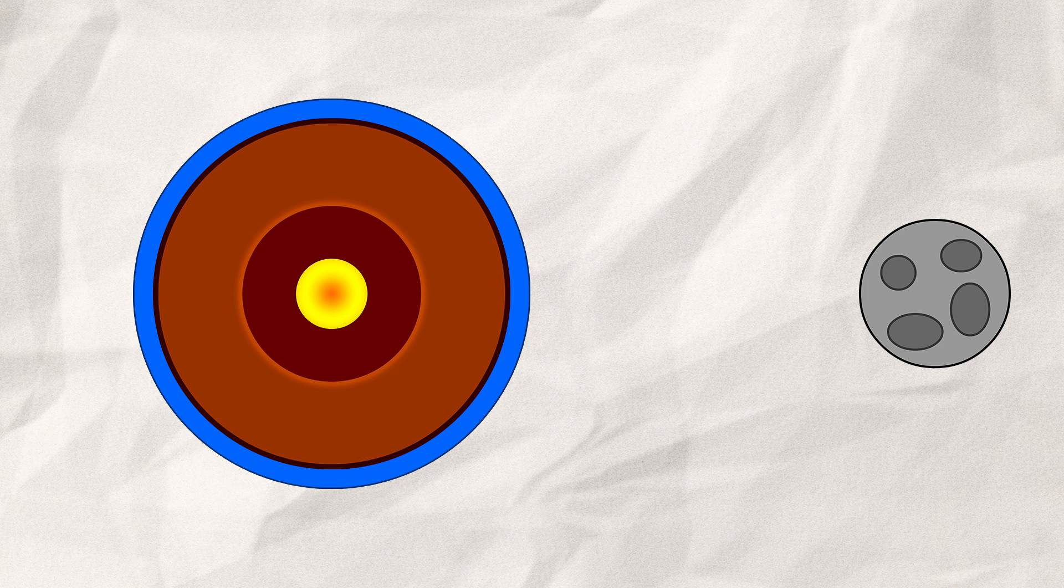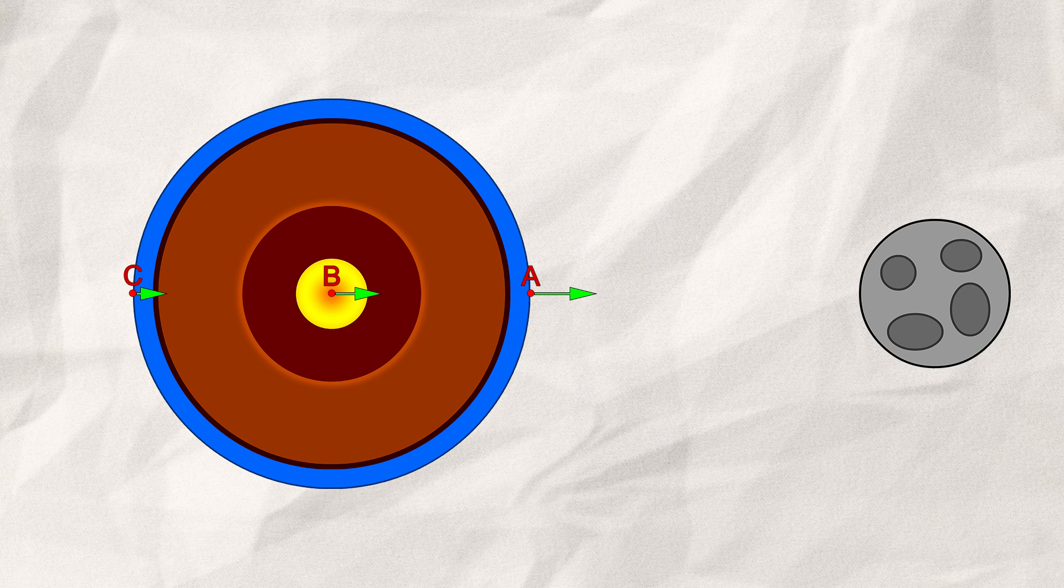First, let us place some points. Every point is attracted or accelerated towards the moon through its gravity. But since gravity becomes weaker over distance, we need to shorten those arrows accordingly.